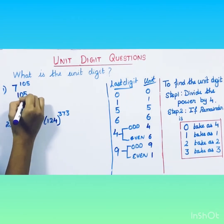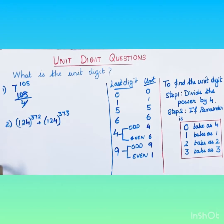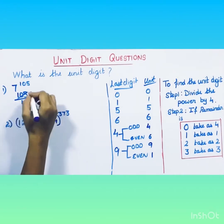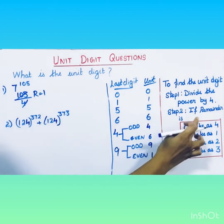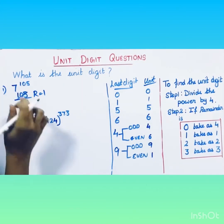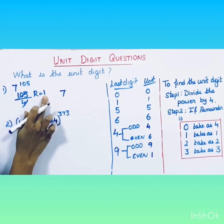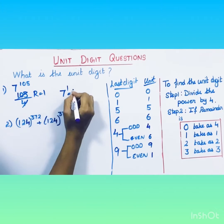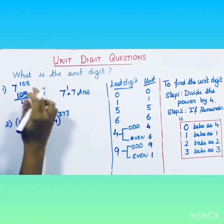For example, take the power and divide it by four. 105 divided by four gives 26 times four plus one, so the remainder is one. We need only the remainder. What we have to find is 7 to the power 105. The base is 7 and the remainder is 1, so take it as one. Seven to the power one is seven, so the unit digit is seven.